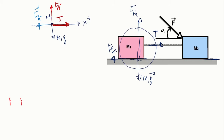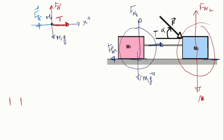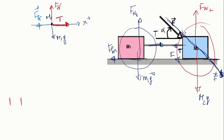Moving to the second object, we shrink the object. We have the normal force Fn2, the weight M2g, and the applied force F. We also have friction force 2 and tension. Make sure that once you shrink the object, any force going to the object is drawn coming out from it, so you can clearly see the direction.